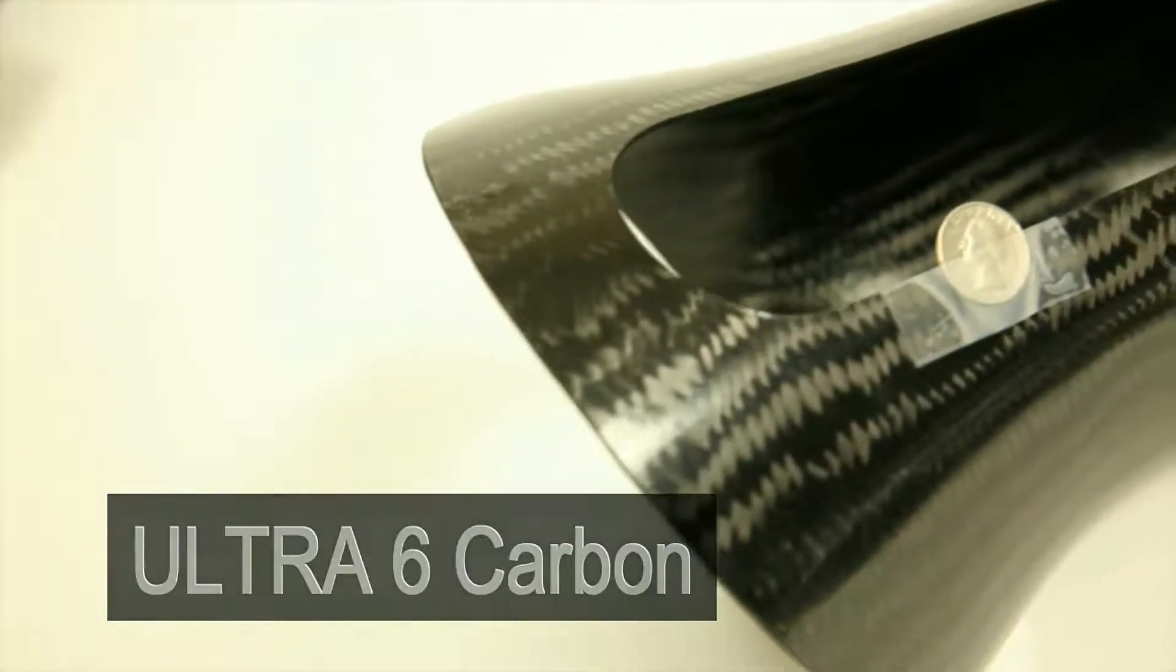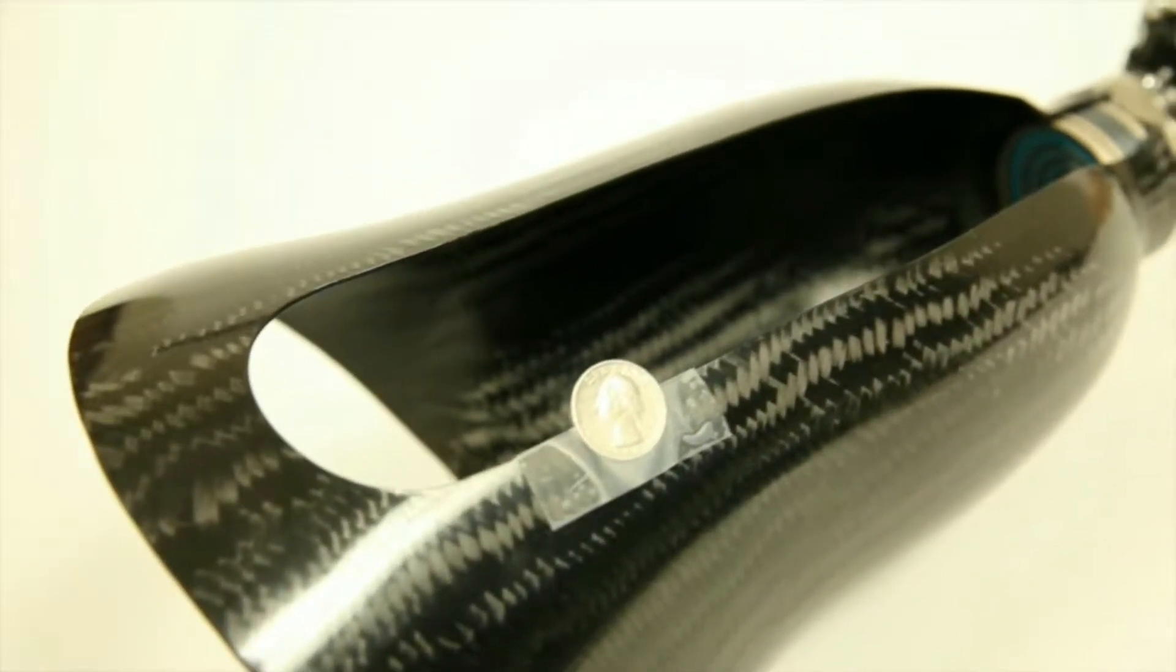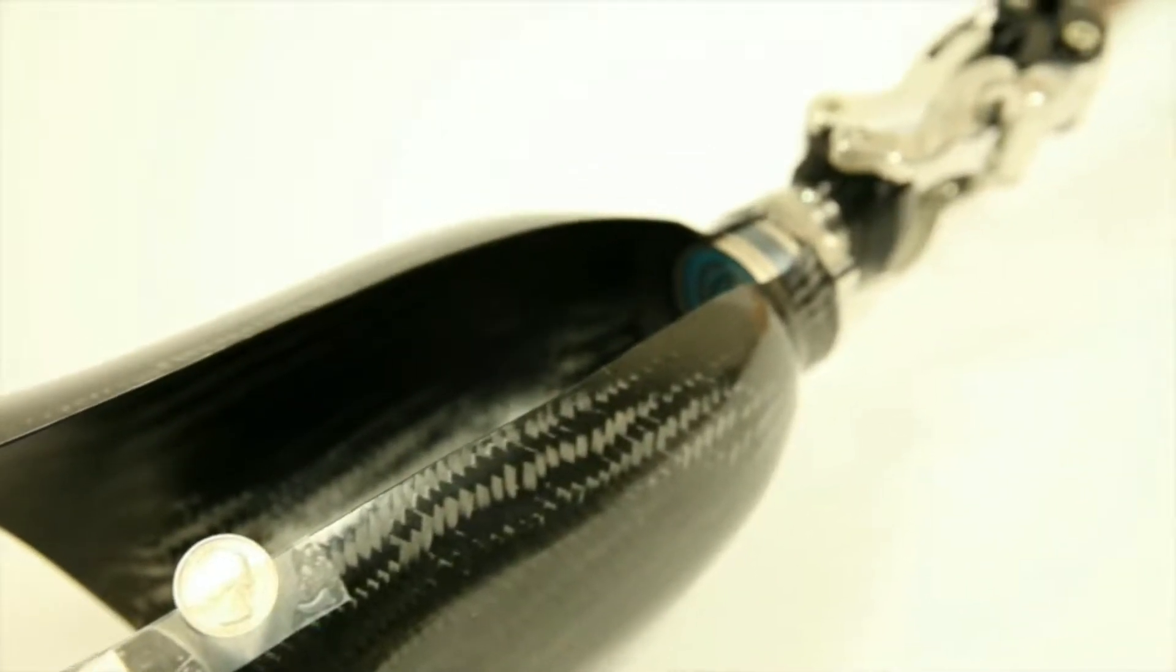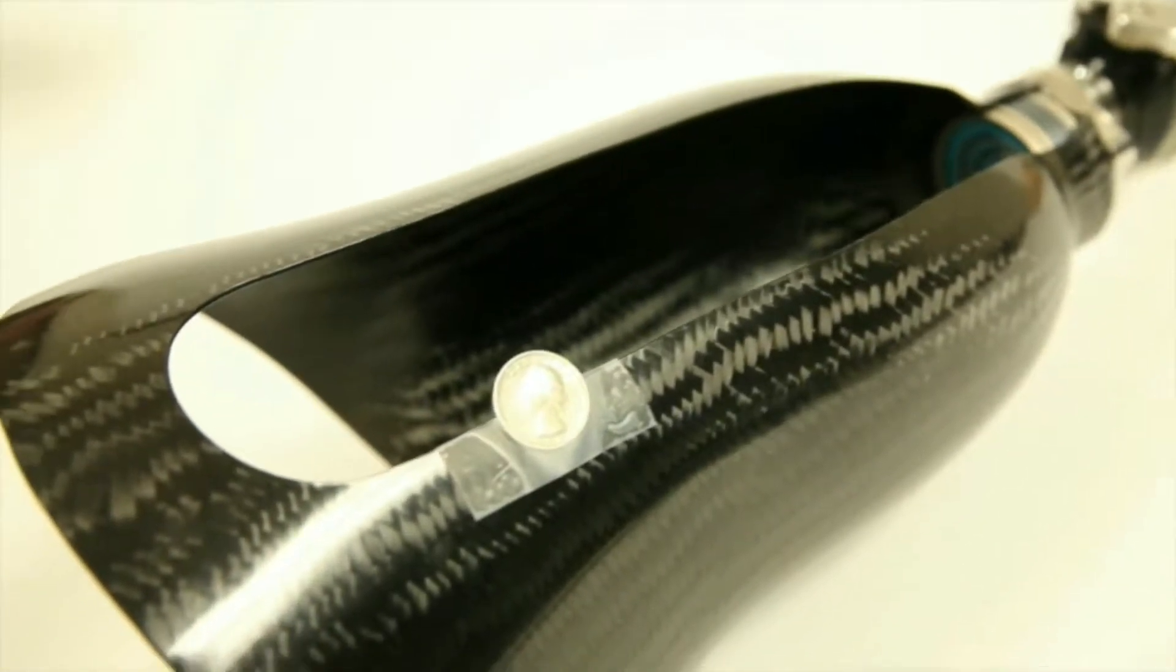I want to introduce a brand new carbon fiber blend here. This is Ultra 6. Ultra 6 is a thinner carbon with a new weave and a new ability to adhere to resins.